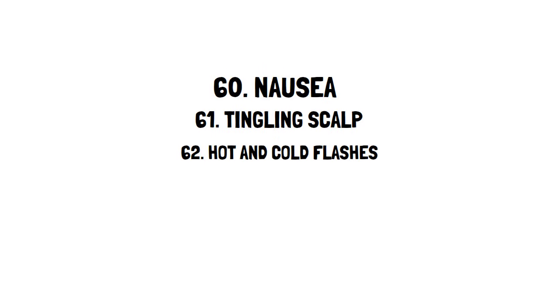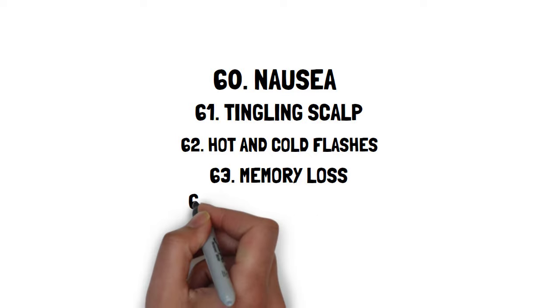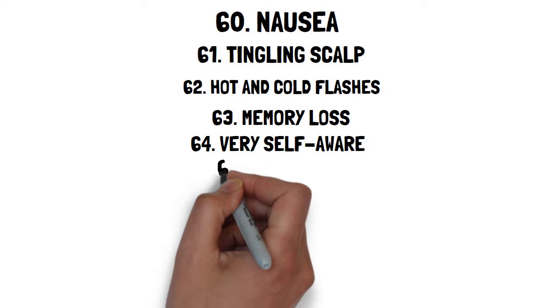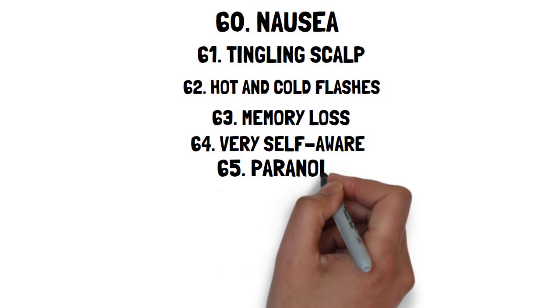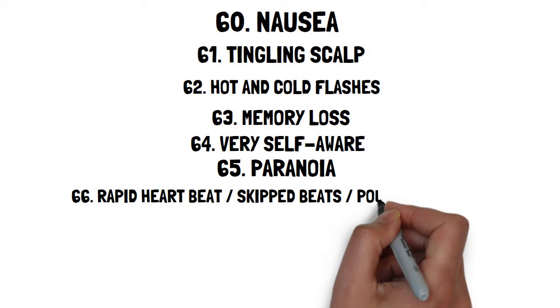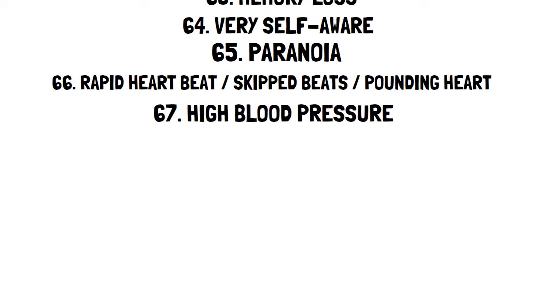Sixty-one, tingling scalp. Sixty-two, hot and cold flashes. Sixty-three, memory loss. Sixty-four, being very self-aware. Always thinking others are looking at you. Sixty-five, paranoia. Sixty-six, rapid heartbeat, skipped beats or a pounding heart. Sixty-seven, high blood pressure. And probably so many more.